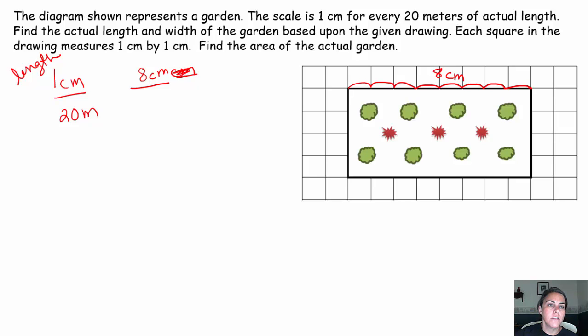So if one centimeter is 20 meters, eight centimeters is how many meters? So one times what is eight? Well, one times eight is eight. Twenty times eight, same to the numerator and denominator. Twenty times eight is 160. So the length of my actual is 160 meters.